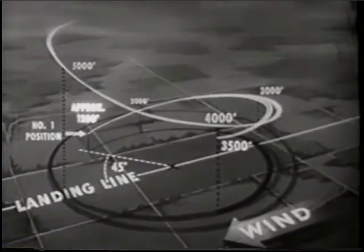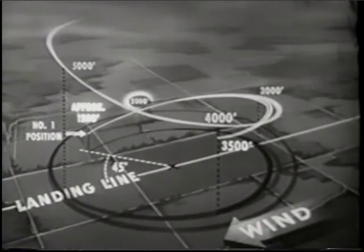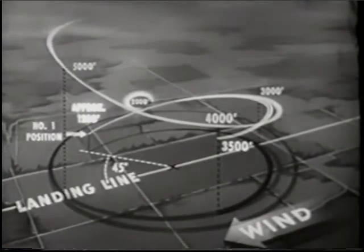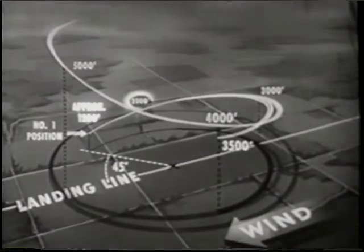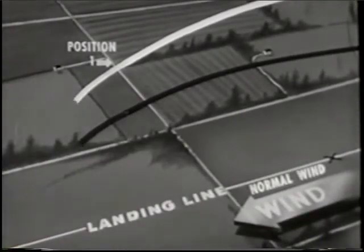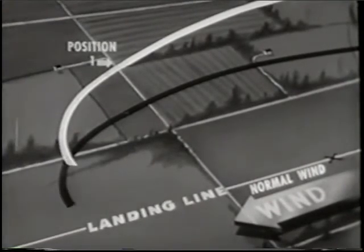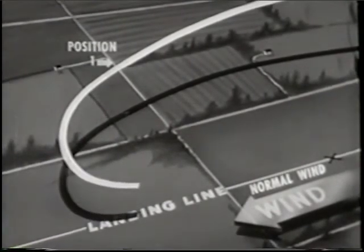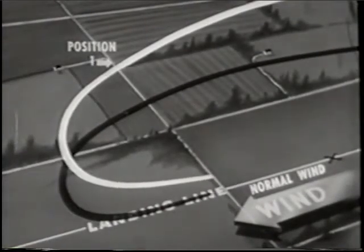The 3,000 foot and the 2,000 foot checkpoints are the most important. Try to hit the 2,000 foot point on the nose. From the number one position in a normal glide at 95 knots, the angle of bank and steepness of your turn to intersect the landing line will vary with the wind condition.